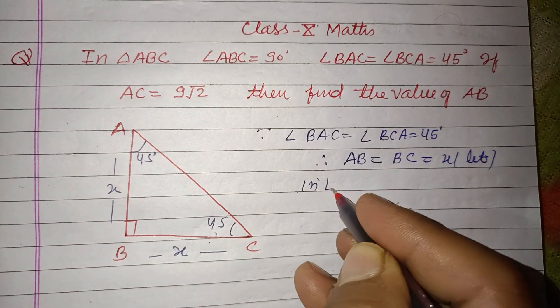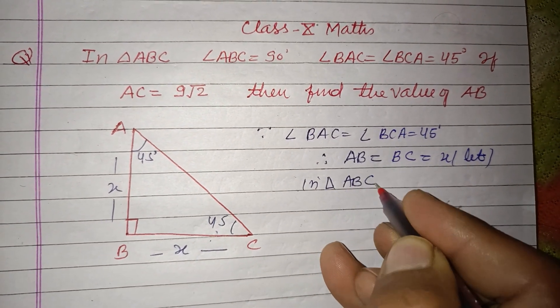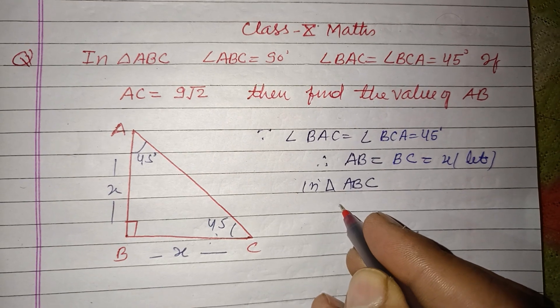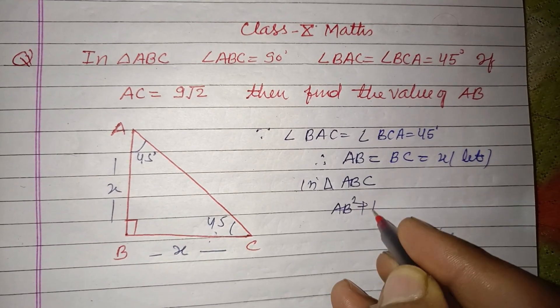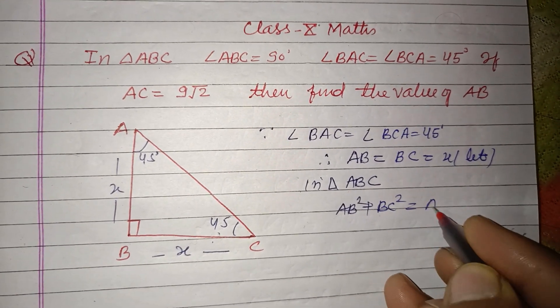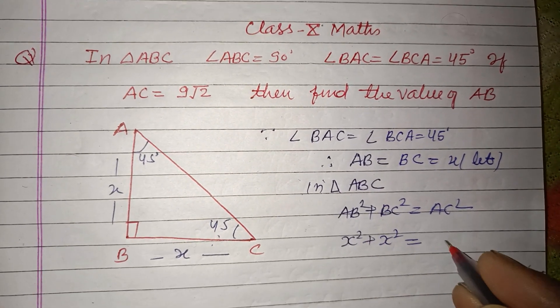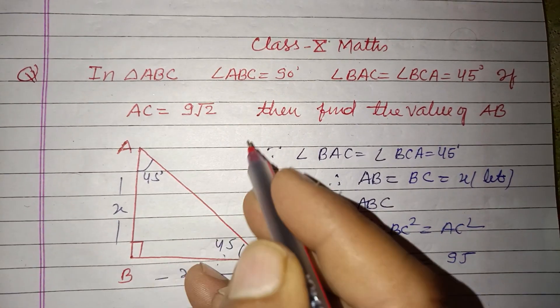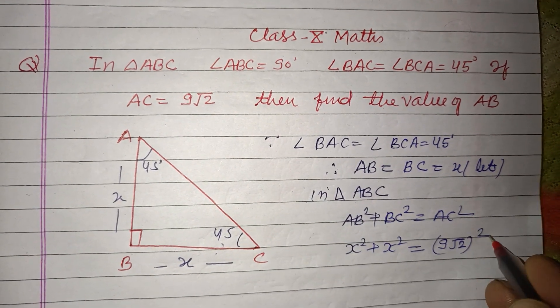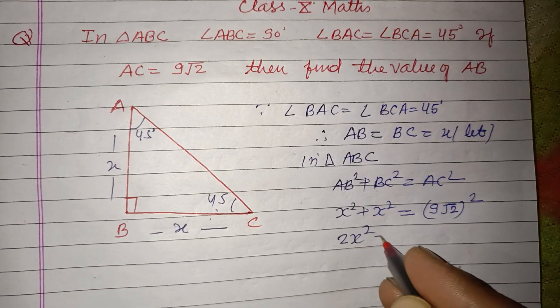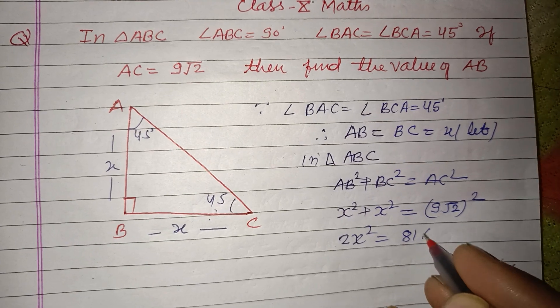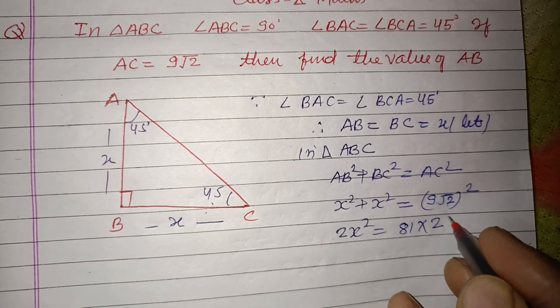In right angle triangle ABC, using Pythagoras theorem, AB² + BC² = AC². This is x² plus this is x² equal to AC, which is given to us as 9√2, whole square. So 2x² equals 81 times √2 square is 2. The 2s cancel.